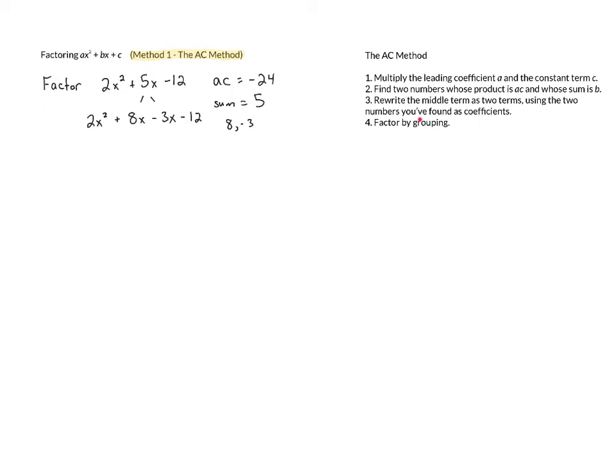Well, now we can factor by grouping because now we have four terms instead of three. The AC method allows us to take a trinomial and rewrite it so that there's four terms, but particularly in the way that grouping is going to end up working. So let's finish this by grouping.